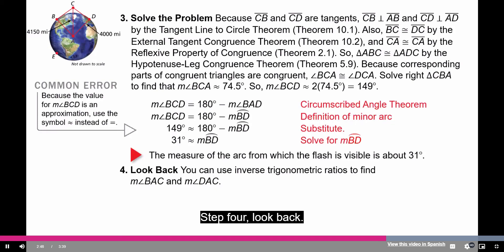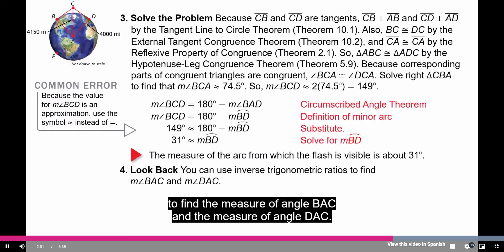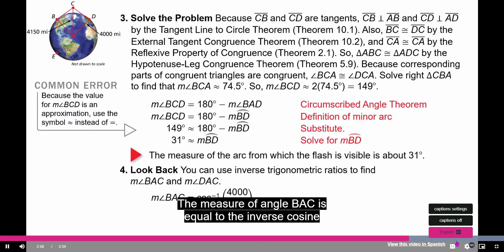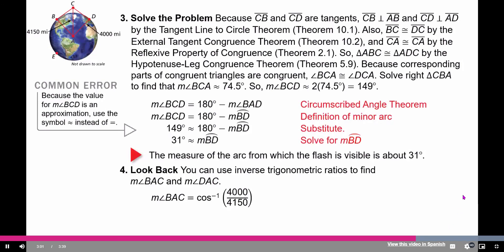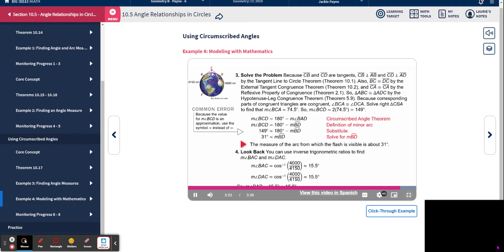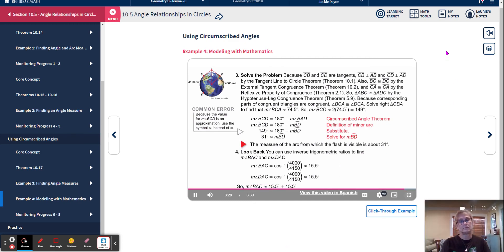Step 4: Look back. Using inverse cosine, the measure of angle BAC equals inverse cosine of 4,000 divided by 4,150, approximately 15.5 degrees. Similarly, the measure of angle DAC is approximately 15.5 degrees. So the measure of angle BAD is approximately 15.5 plus 15.5 degrees, which equals 31 degrees. Therefore the measure of arc BD is approximately equal to 31 degrees, confirming our answer.